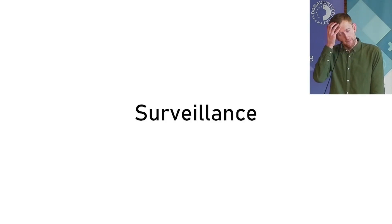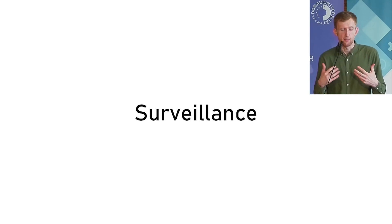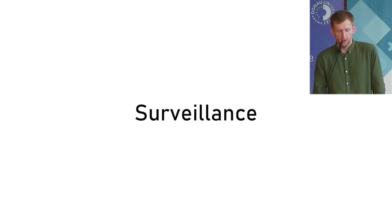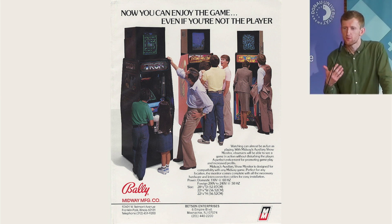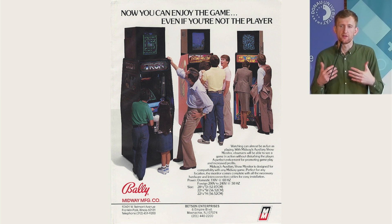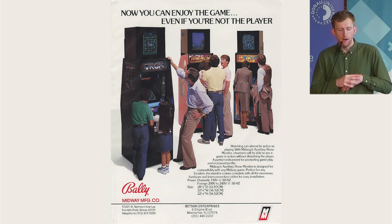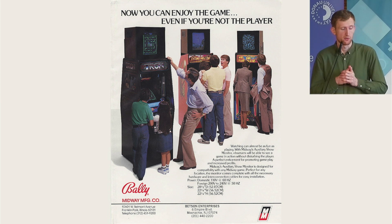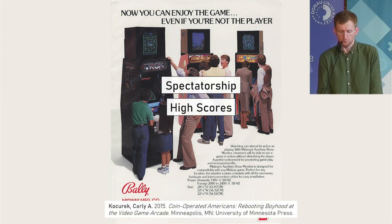I want to start with the theme of surveillance and how it has evolved over time, and how different technological possibilities have changed how surveillance is thought of and implemented in video games. This is a fairly ridiculous example of what we might understand as surveillance — it's perhaps more of a spectatorship of games. Spectatorship and observing what others are doing in games goes back to the early days, especially during the arcade golden age, when it was fairly common to watch how others are doing.